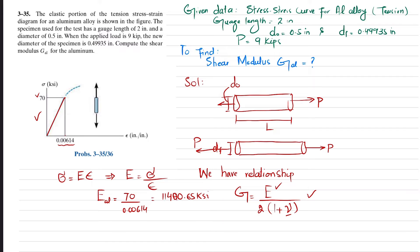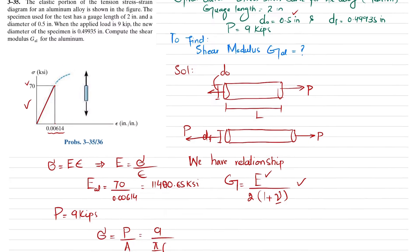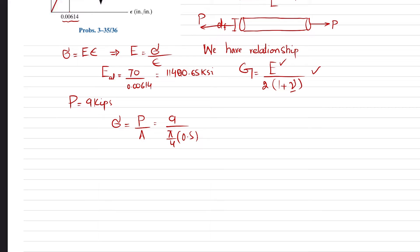Now, with E known and a load of 9 kips applied, we calculate stress: σ = P / A = 9 / (π/4 × 0.5²) = 9 / (π/4 × 0.25). The stress comes out to be 45.84 ksi.